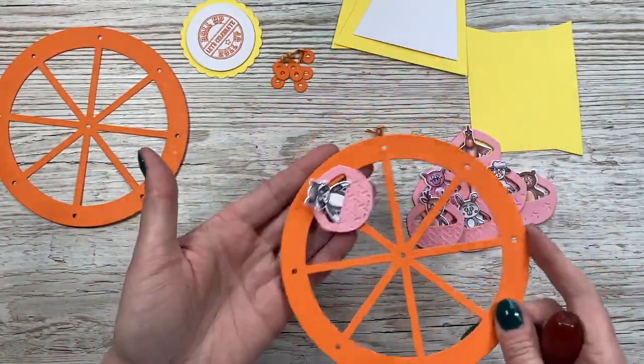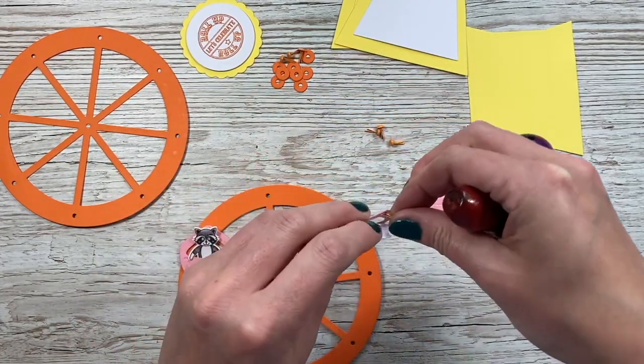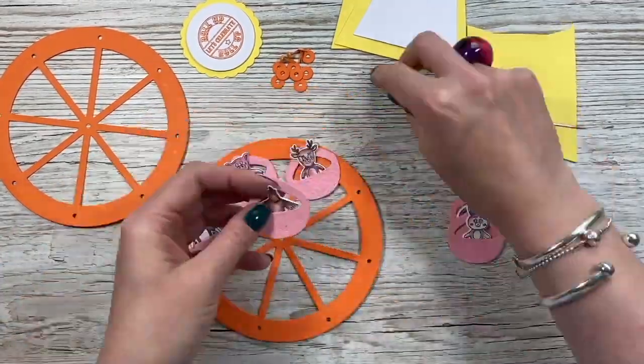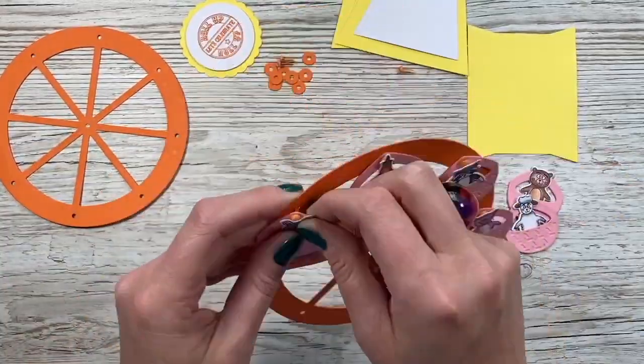Just use that to fold one of the sides over and it will keep it lifted off the cardstock and give you that really nice swing. You want them to dangle more than anything. I'm just going to go through and get the rest of those attached to the wheel in exactly the same way.